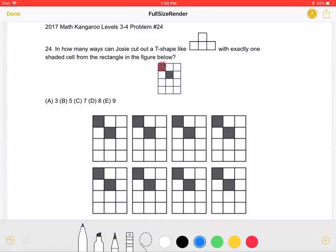In how many ways can Josie cut out a T-shape like the figure with exactly one shaded cell from the rectangle in the figure below?